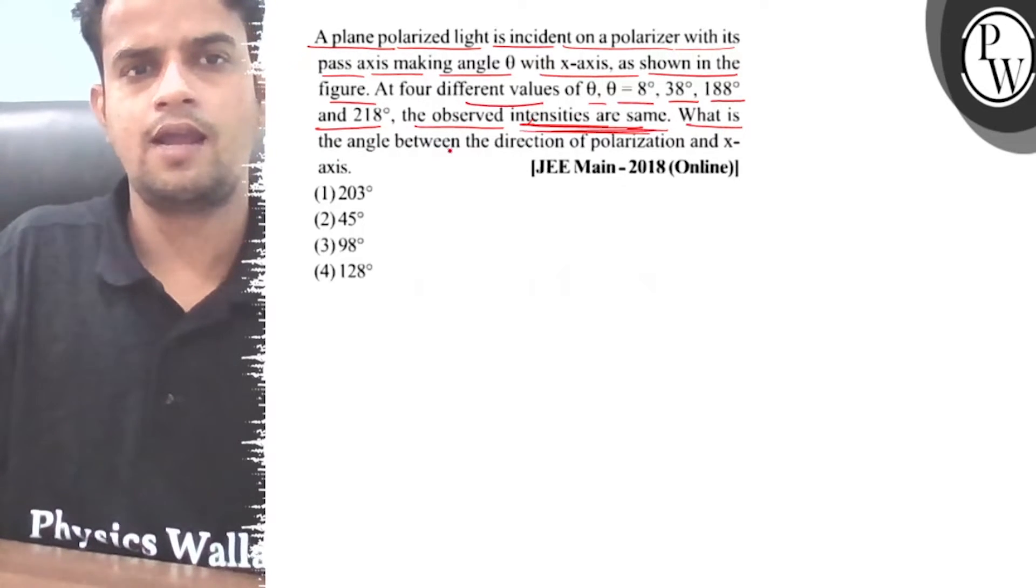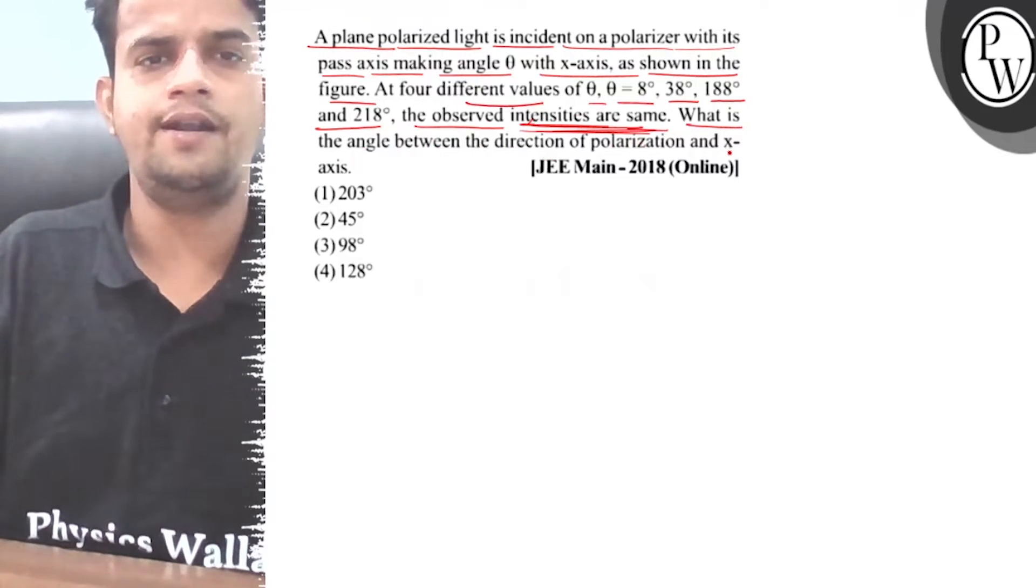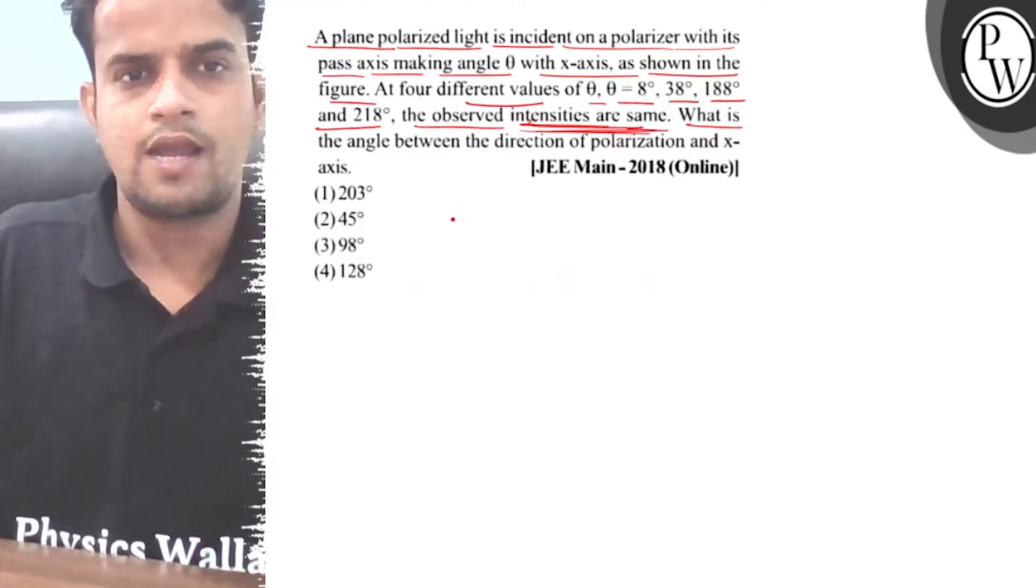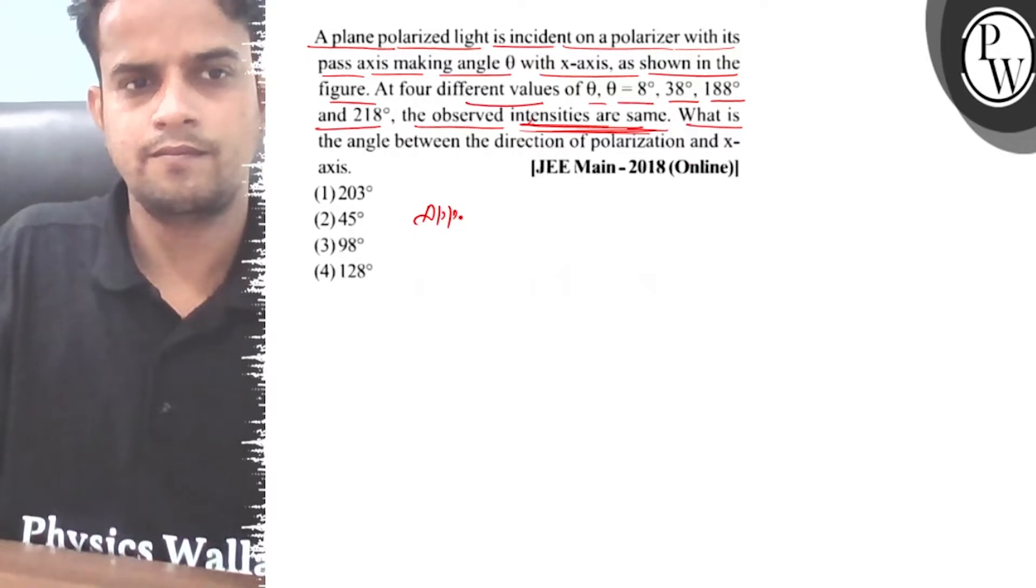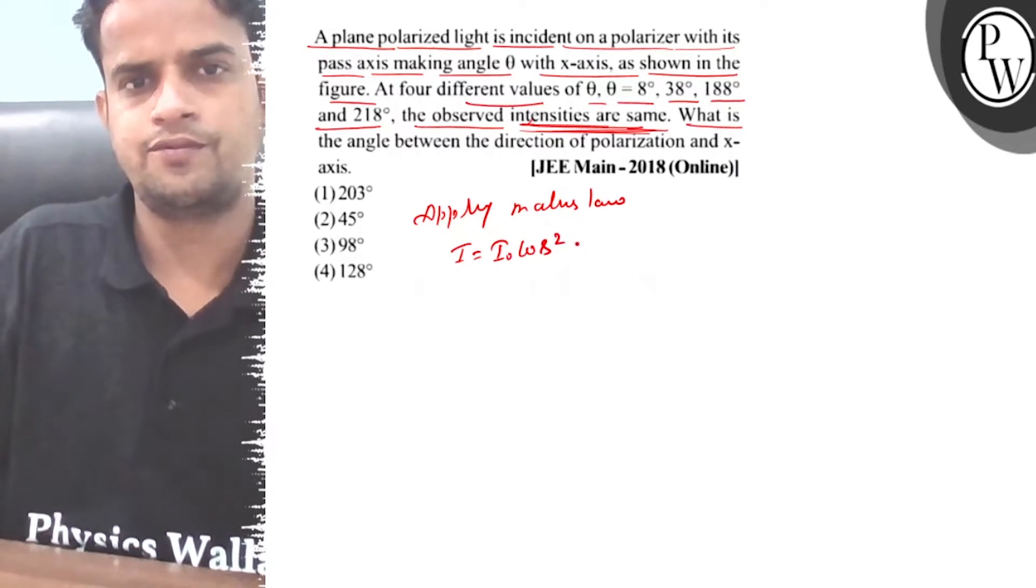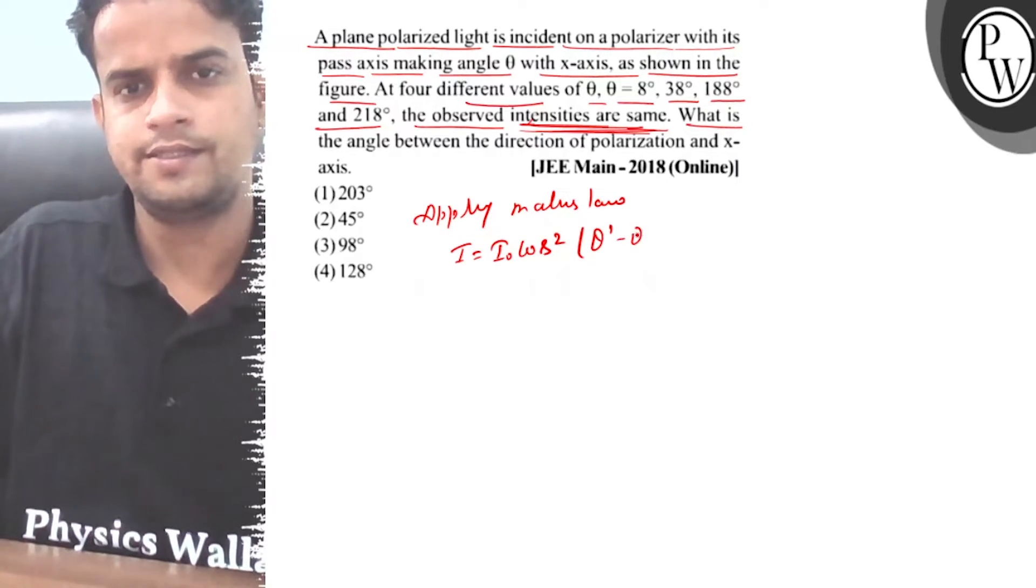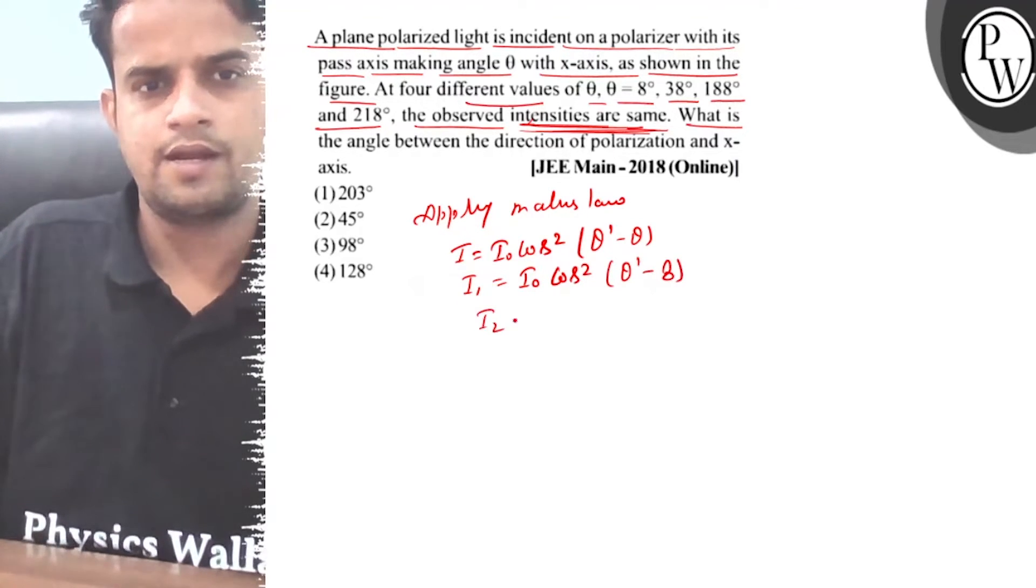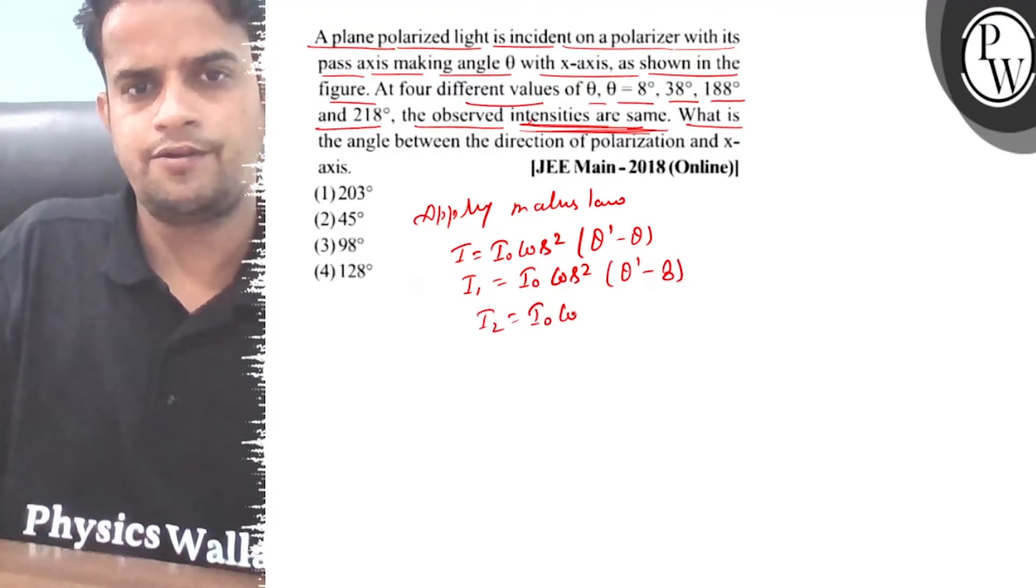What is the angle between the direction of polarization and x-axis? Apply Malus law. I0 equals I naught cos square theta dash minus theta. I1 equals I naught cos square theta dash minus 8 degrees. I2 equals I naught cos square theta dash minus 38 degrees.